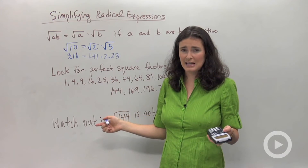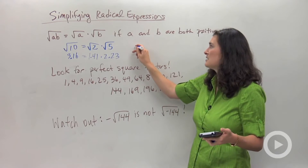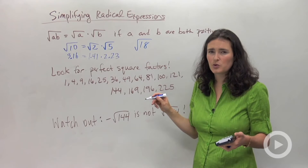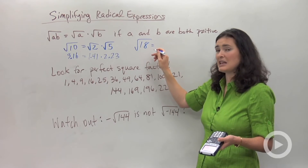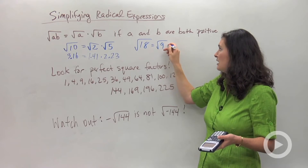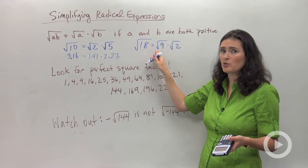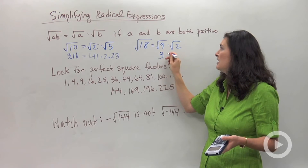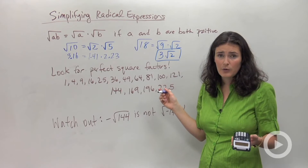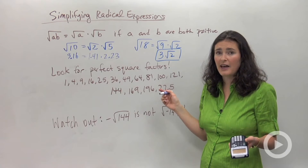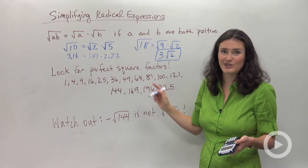Sometimes this doesn't make a whole lot of sense without a calculator, but it can be really useful in problems like simplifying the square root of 18. I don't know what the square root of 18 is off the top of my head, but I do know that 18 equals 9 times 2. So the simplified form of the square root of 18 is the square root of 9 times the square root of 2, which is 3 times the square root of 2. Simplified form means there are no perfect square factors remaining in the radicand.